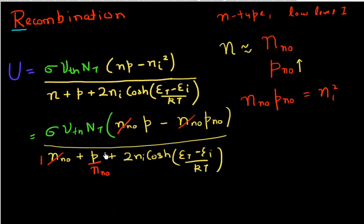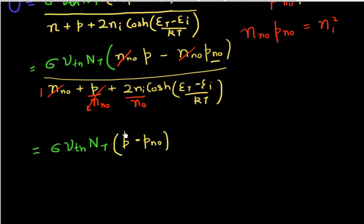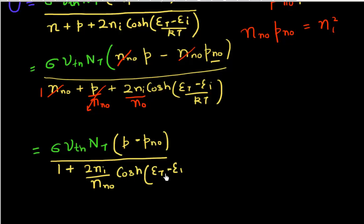N_N0 vanishes from the numerator and denominator, and this term becomes one. I get P divided by the number of electrons in equilibrium — P_N0 over N_N0 — and I'll ignore this term because in an N-type semiconductor with low-level injection, this is a very small number. Then I get 2Ni divided by N_N0. Collecting all terms together: sigma, Vth, Nt — the constant terms — multiplied by (P minus P_N0), divided by 1 plus 2 times Ni over N_N0 times cosh of (Et minus Ei) over kT. So this is my net rate of recombination.